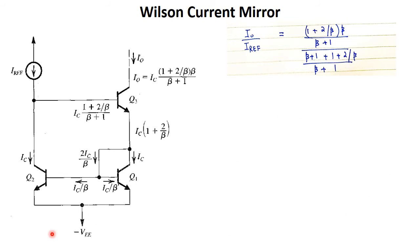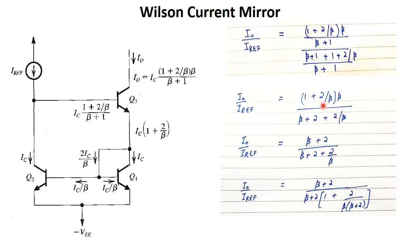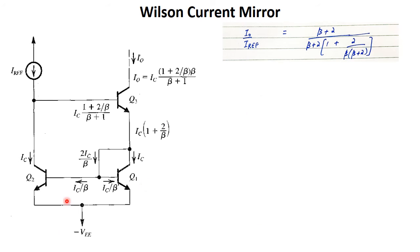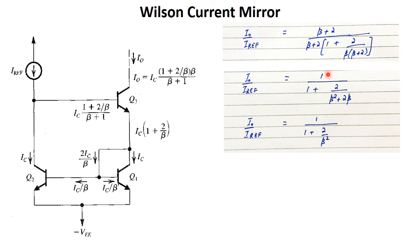Continuing the derivation: (β+1) cancels in numerator and denominator. Expanding and multiplying β into the denominator gives (β+2) divided by (β+2 + 2/β). Factoring (β+2) as common in the denominator gives 1 over (1 + 2/(β(β+2))). Since β² is much greater than 2β, we can ignore the 2β term, and I-out over I-reference simplifies to 1 over (1 + 2/β²). So I-out depends upon β² and is less dependent on β.